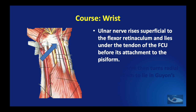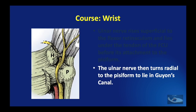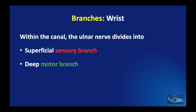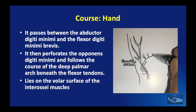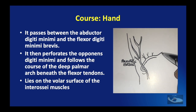As the ulnar nerve reaches the wrist, it becomes superficial to the flexor retinaculum and lies under the tendon of the flexor carpi ulnaris before the tendon attaches to the pisiform bone. The nerve then turns radial to the pisiform to lie in Guyon's canal. Within the canal, the ulnar nerve divides into its terminal branches: the superficial sensory branch and the deep motor branch. The deep branch passes between the abductor digiti minimi and flexor digiti minimi brevis, perforates the opponens digiti minimi, and follows the course of the deep palmar arch beneath the flexor tendons, lying superficial to the interosseous muscles.